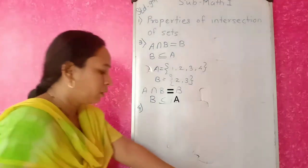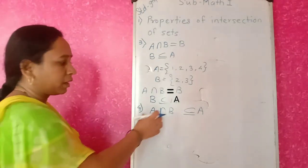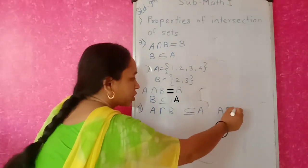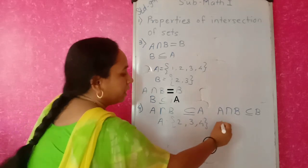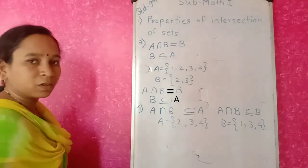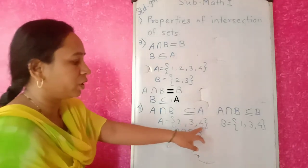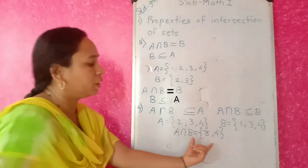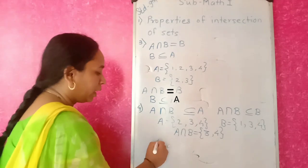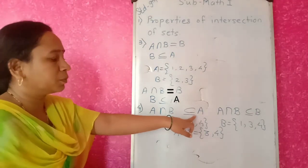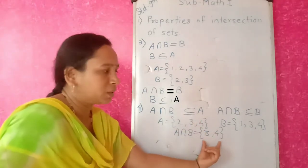Fourth property: A ∩ B is a subset of A, and A ∩ B is also a subset of B. For example, A = {2, 3, 4} and B = {1, 3, 4}. A ∩ B gives the common elements {3, 4}. This intersection part is always a subset of A — all elements 3 and 4 are in A. And all elements 3 and 4 are also in B. So A ∩ B ⊆ A and A ∩ B ⊆ B. If you want to revise the subset definition, the link is given in the description box.